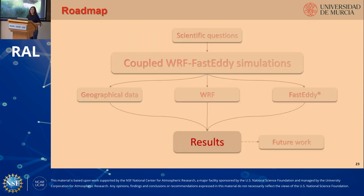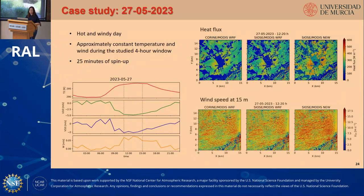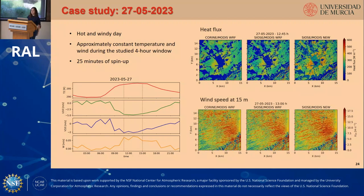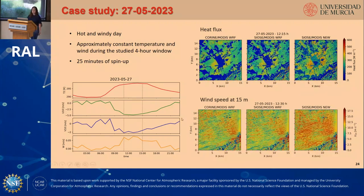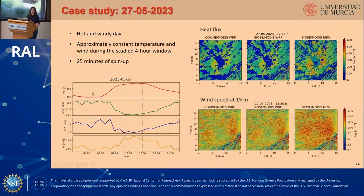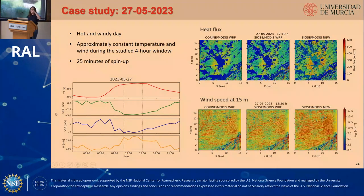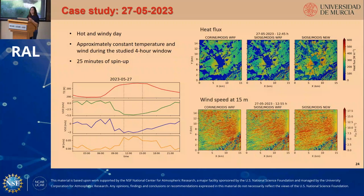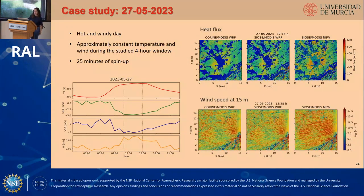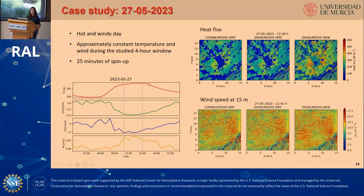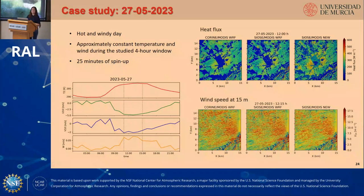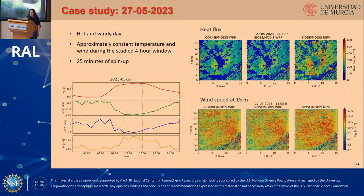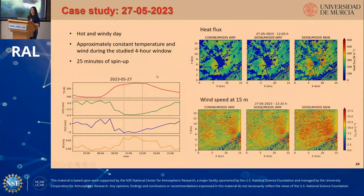Now I'm going to show you some preliminary results for the case study of May 27th, 2023. In these animations you are seeing the heat flux and the wind speed at 15 meters. The figure shows temperature at 2 meters and wind components for the center of the domain from the WRF simulation output. It was a hot and windy day without rain in the micro-scale domain, with approximately constant temperature and wind during the study window. This quasi-stationary period is particularly helpful when studying spatial heterogeneities from a statistical perspective. We ran a four-hour simulation, removing the first 25 minutes as spin-up.